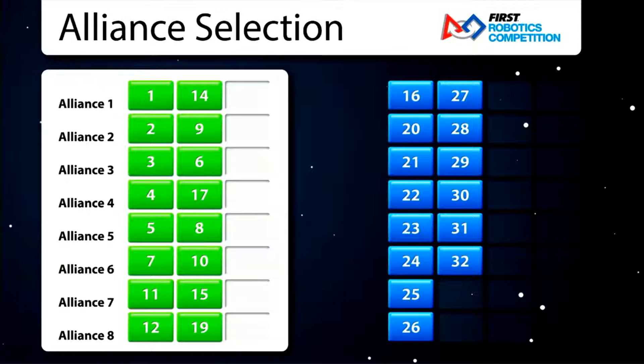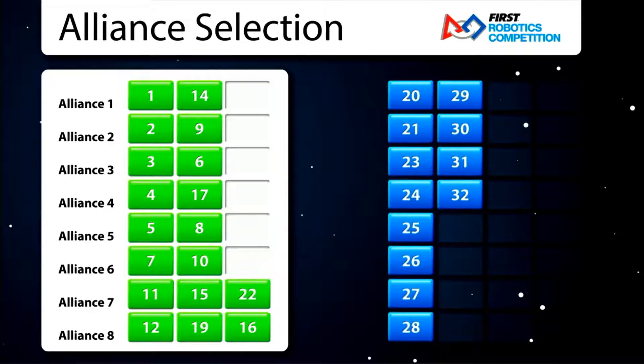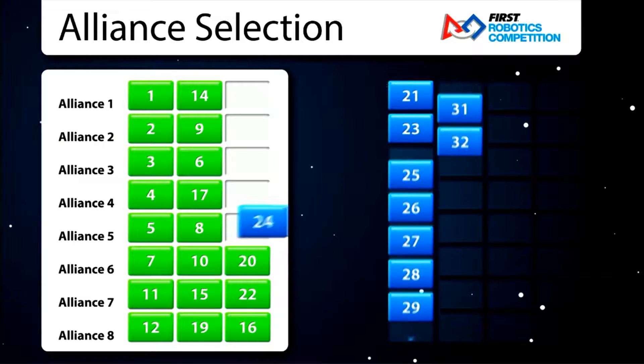Alliance 8 now picks their third team member from the remaining available teams. Alliance 7 picks their third team member. And so on, all the way back to the number 1 alliance.